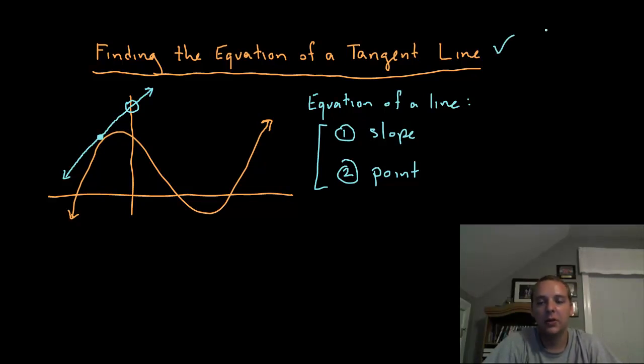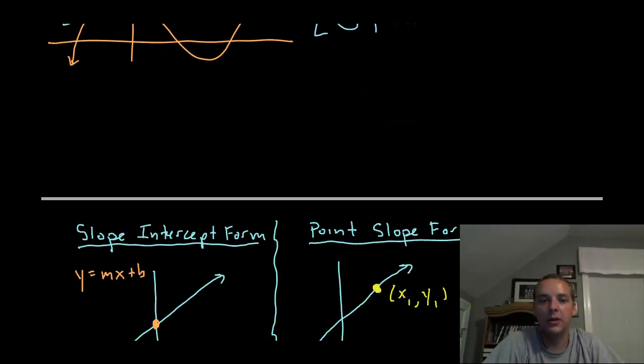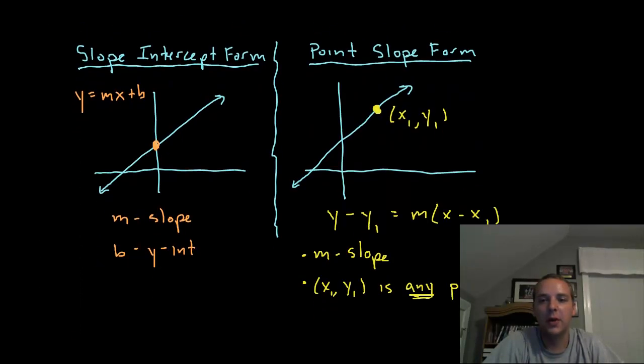Just a quick reminder from your old algebra classes. You can write a line in slope-intercept form. This is probably the most familiar form: y equals mx plus b, where m stands for the slope and b stands for the y-intercept. So if we were given both of those things, it would be very easy to write the equation of those lines.